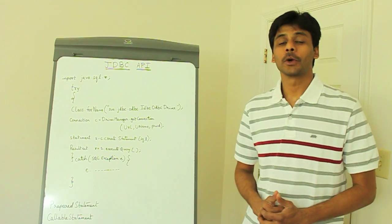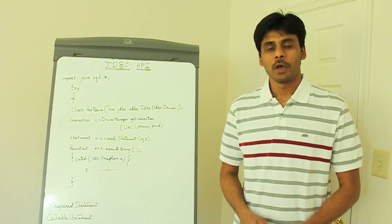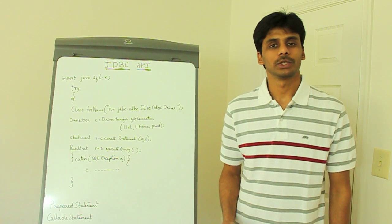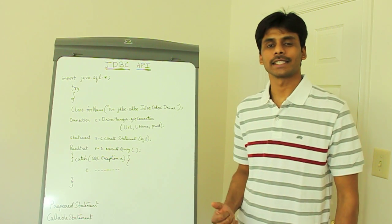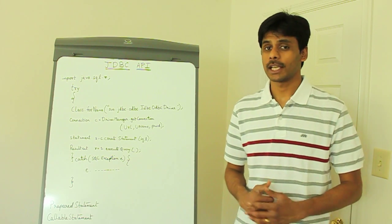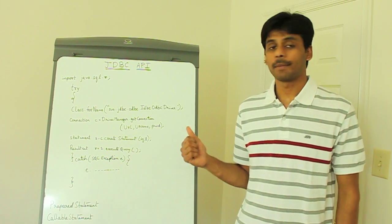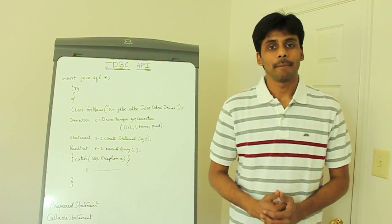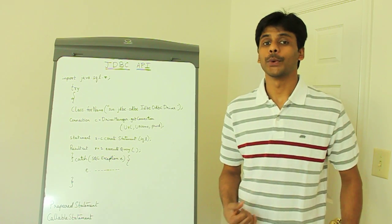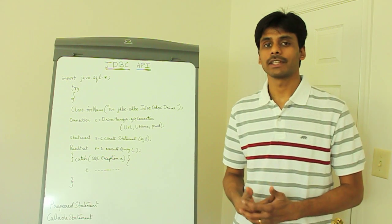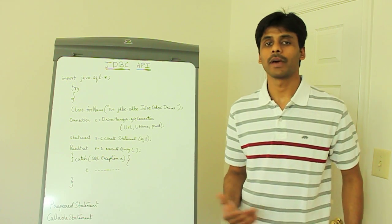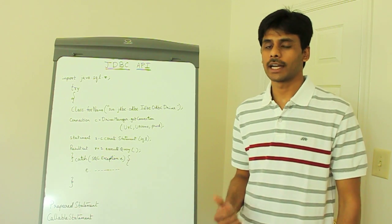As mentioned in the Core Java overview presentation, once you learn the language fundamentals, it's all about applying your knowledge to understand the interfaces and classes that make up the different Java and J2EE APIs. One such API is the JDBC API, which allows your Java applications to connect to databases like Oracle, SQL Server, or MySQL, and to execute SQL statements that will add, update, delete, or query your database tables.